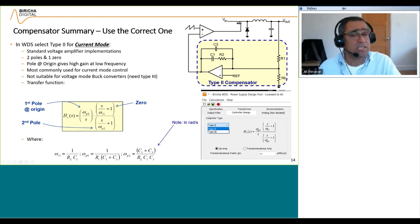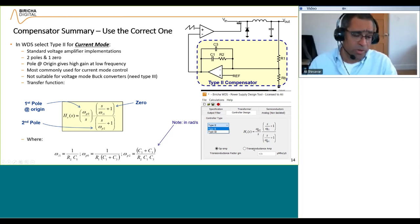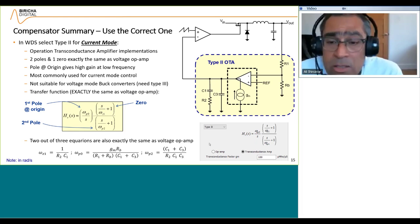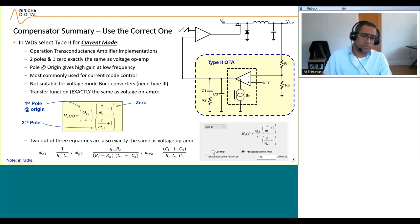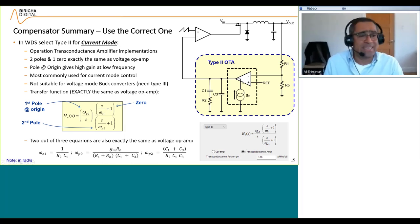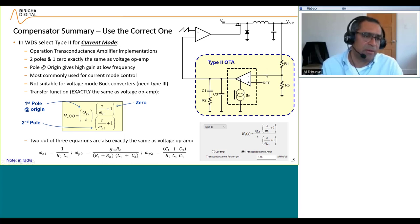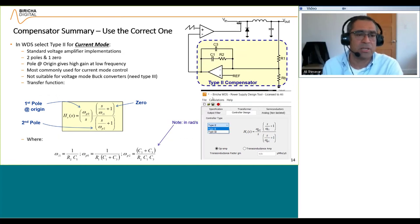WDS automatically selects the correct type for you, but you can also manually select whether you want type 2 or type 3, or whether you want a normal op-amp or a transconductance op-amp. There is a normal op-amp and a transconductance op-amp. A transconductance op-amp basically has a current source on the output, so instead of the compensator components being fed back to the inverting pin, they are tied to ground.